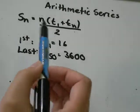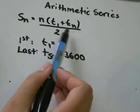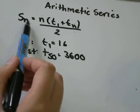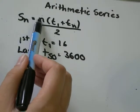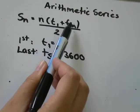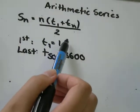So I can find the sum by using the formula Sn equals n times T1 plus Tn, all divided by 2. Sn is the sum of n terms, equals the number of terms times the first term plus the term at n, divided by 2.